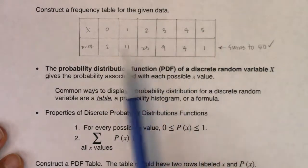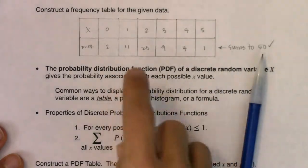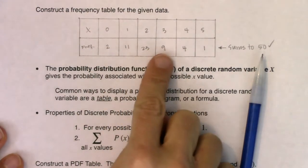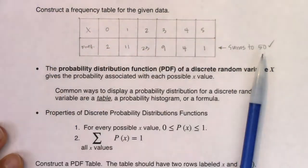The PDF for a discrete random variable X gives the probability associated with each possible value of X. We're literally going to talk about between these six values for X - zero, one, two, three, four, five - where did the probabilities get distributed? Is it mostly on the zeros? Is it mostly on the fours? Is it mostly on the twos and threes? We want to figure out where were the probabilities distributed.